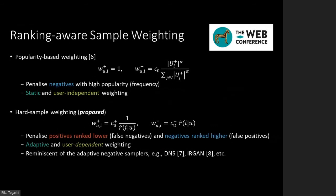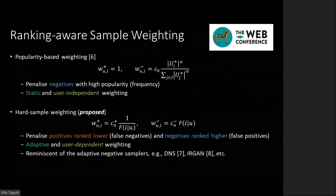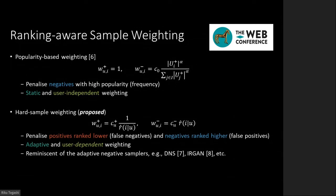Most pointwise methods adopt a weighting strategy based on item popularity, which penalizes negative items with high popularity. This strategy uses static and user-independent weighting. On the other hand, conventional negative sampling strategies often use adaptive and user-dependent sampling distributions. Such adaptive sampling distributions reflect the current state of the ranker model and contribute to the top-weighted property and ranking effectiveness. By following such adaptive negative samplers, we propose an adaptive weighting strategy called hard sample weighting, by simply using the estimated density ratio at each training step. For positive items, our strategy weighs items with lower estimated density ratios. It penalizes positives ranked lower and negatives ranked higher, namely false negatives and false positives.